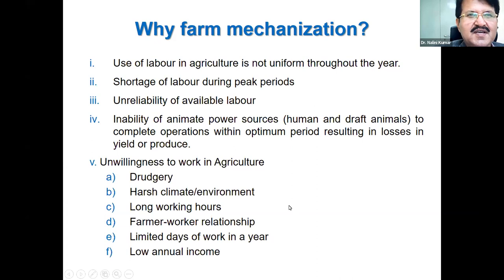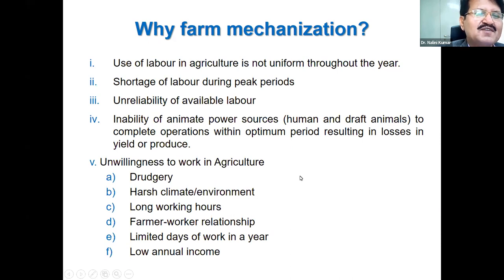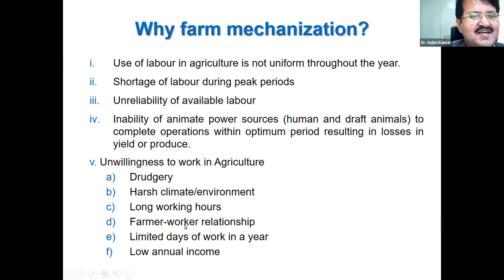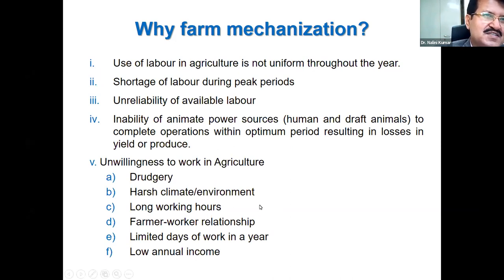Harsh climate and environment — workers have to work in sub-zero degree temperature as well as 50–52 degree temperature. Nobody wants to venture out in such climatic conditions. Wrong working hours — agriculture is not five or six hours work every day. You have to go to the field at night and start very early in the day. When work requires it, you have to work 10–12 hours continuously. Long working hours in the industrial sector attract people, and everybody is attracted towards white-collar jobs.